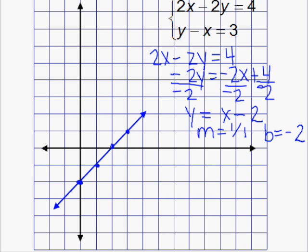So now we'll work on the second equation, y minus x is equal to 3. To put this into slope-intercept form, we're going to add x to both sides. So that gives us y equals x plus 3.